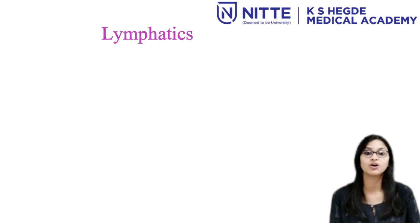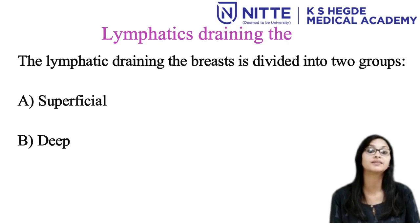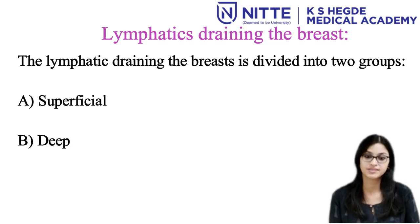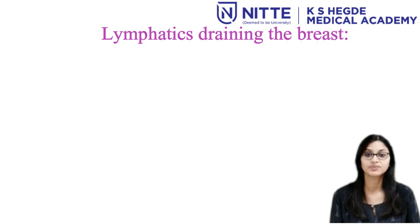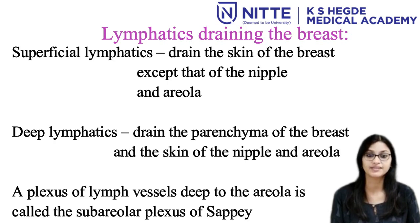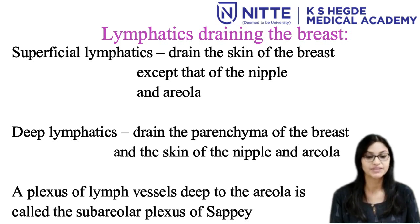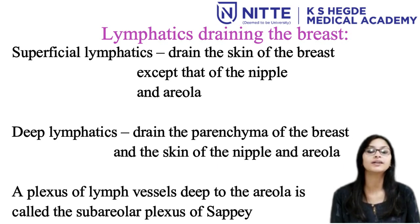The lymphatic drainage of the breast can be divided into two: the superficial lymphatic vessels and the deep lymphatics. The superficial lymphatics drain the skin of the breast, except that of the nipple and areola. The deep lymphatics drain the parenchyma of the breast and the skin of the nipple and areola. The plexus of lymphatic vessels deep to the areola is called the subareolar plexus of Sappey.